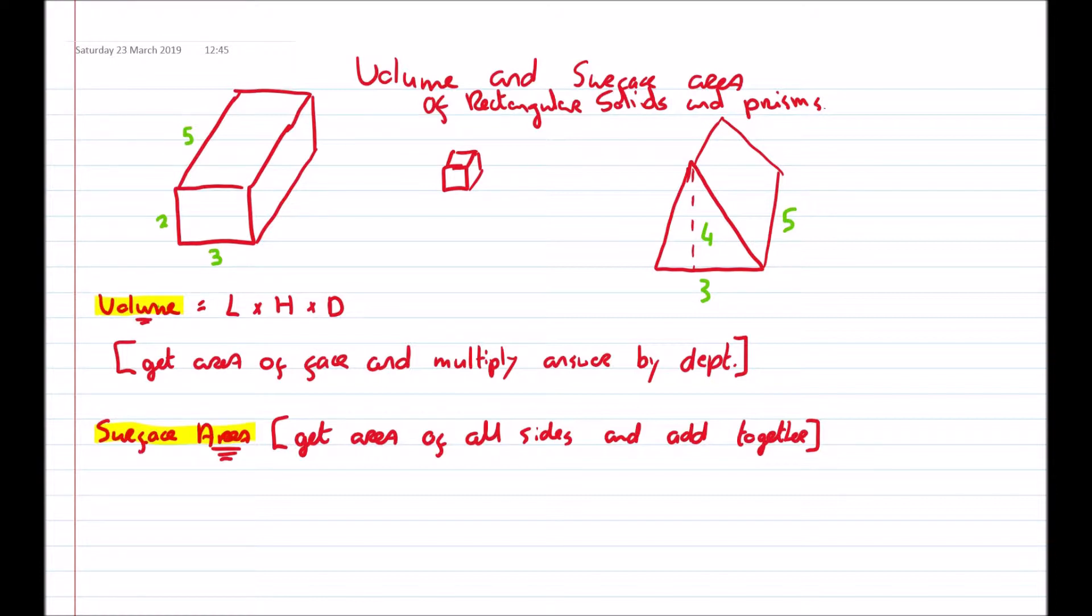So if we're asked to find the volume of something, what they're really asking is how much stuff will fit in these shapes, or these 3D objects. Whereas if they're asking about the surface area, they're looking at all the different sides of the object. And if you lie them out flat, how many centimeters squared would you be able to fit flat on top?